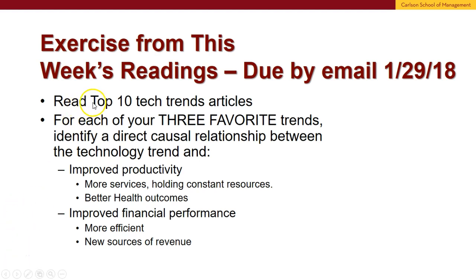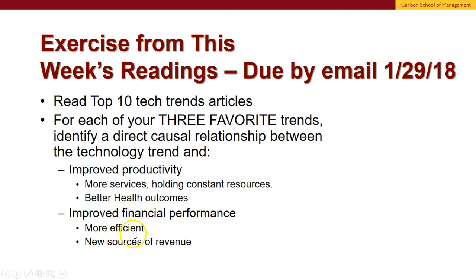What you need to do is read a Top 10 Trends article, which I'll show you in a second. Of those 10, find your three favorite trends and identify a direct causal relationship between the technology and trend, and how it might enhance or lead to improved productivity — that is, more services holding constant resources to create that service — or better health outcomes. You also want to see improved financial performance: more efficiency, new sources of revenue, and so forth.